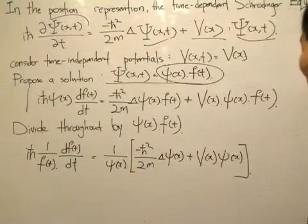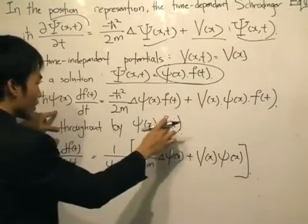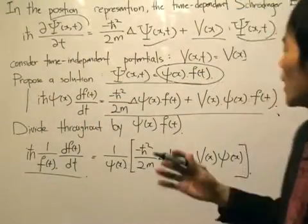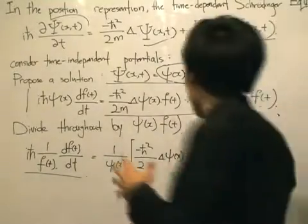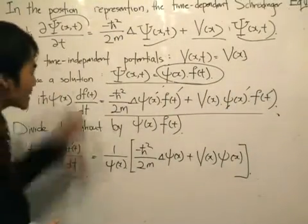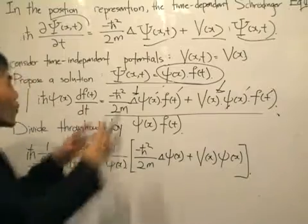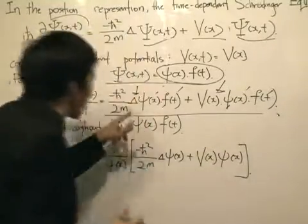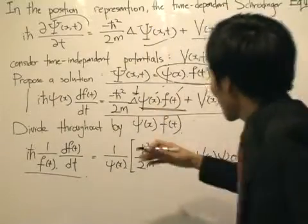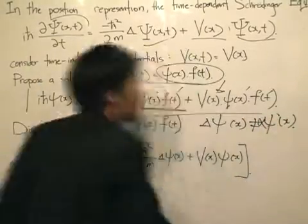Now it's time to test our mathematics and knowledge about operators. On the left-hand side, φ cancels and f(t) goes to the denominator. On the right-hand side, we must be very careful — we cannot simply cancel φ(x) out, because this would be a remarkable mistake. The Laplacian and the potential are operators. They operate on the function given; they are not expressions that we simply multiply together and cancel. So this does not simply equal a constant multiplied by something — they are operators.